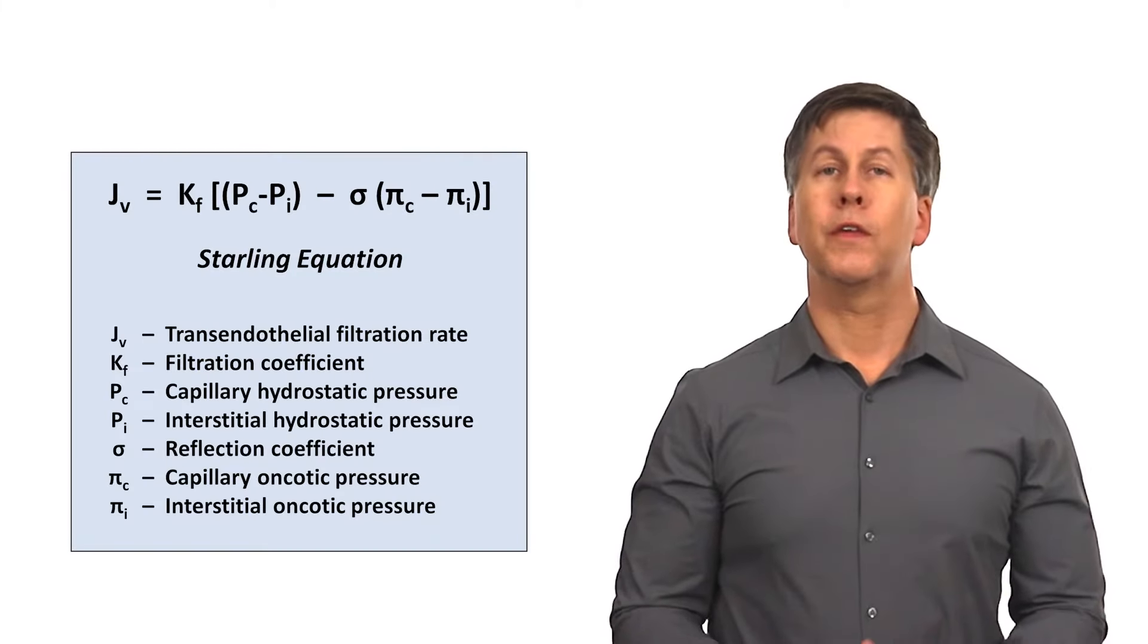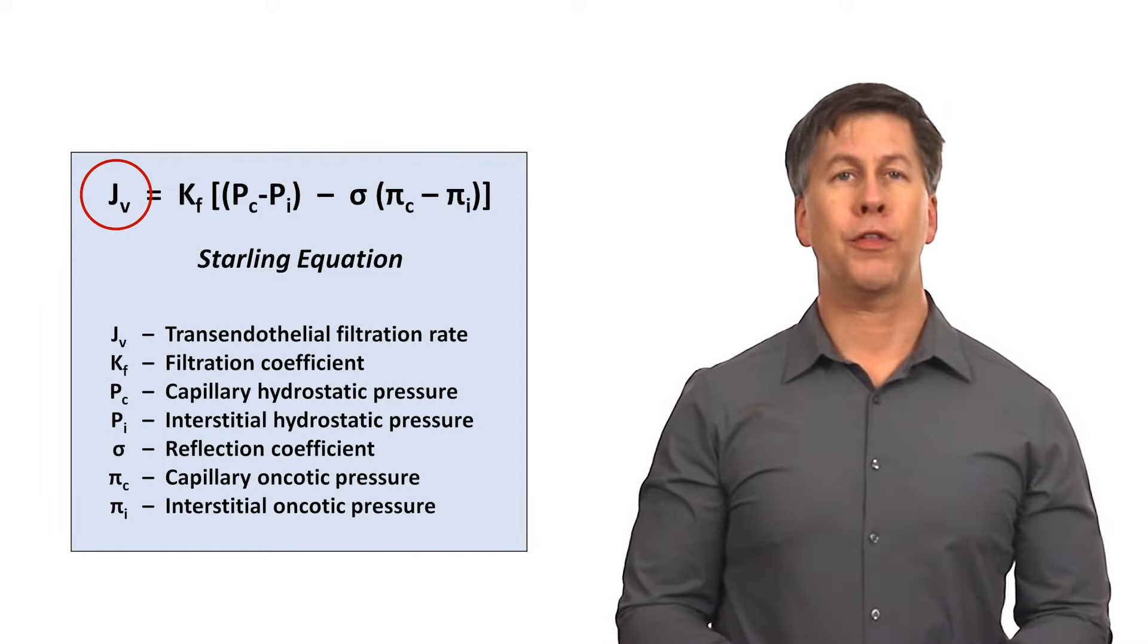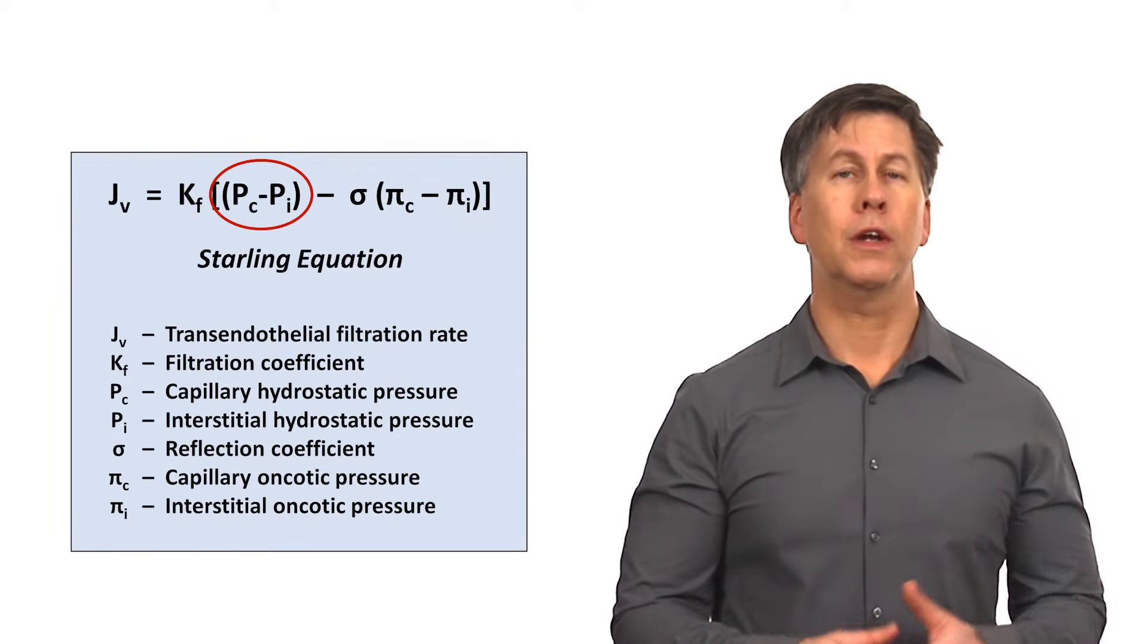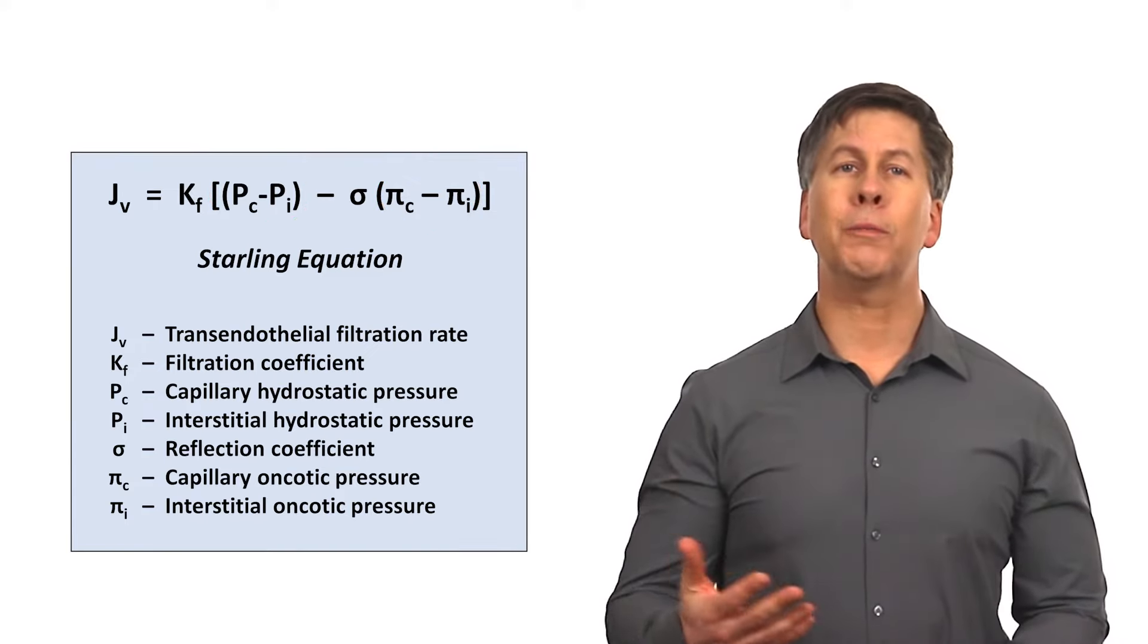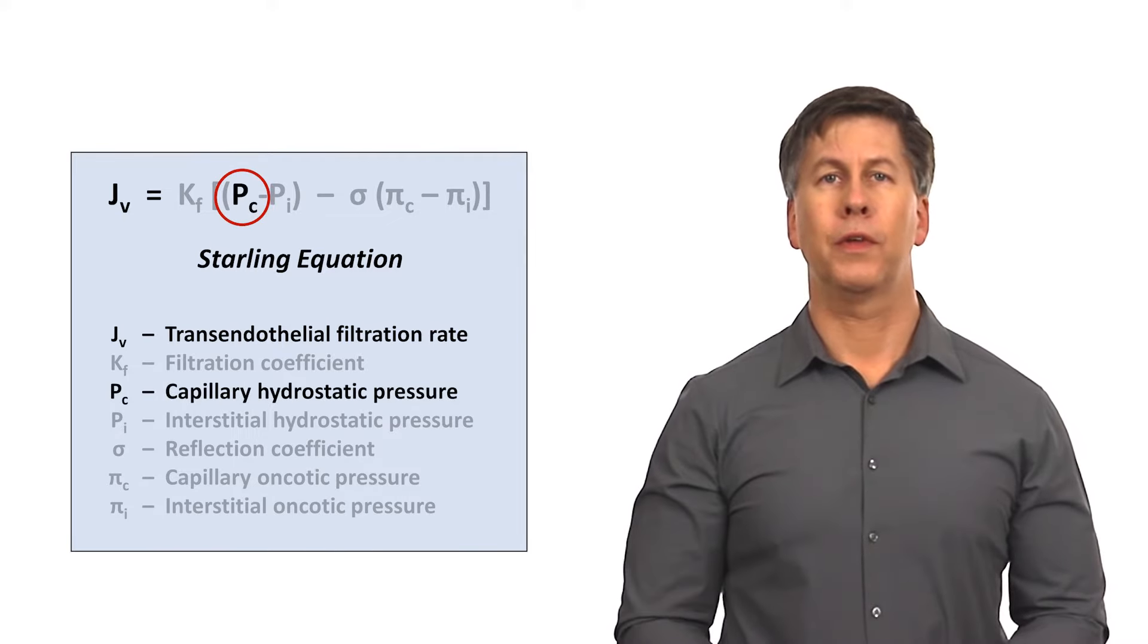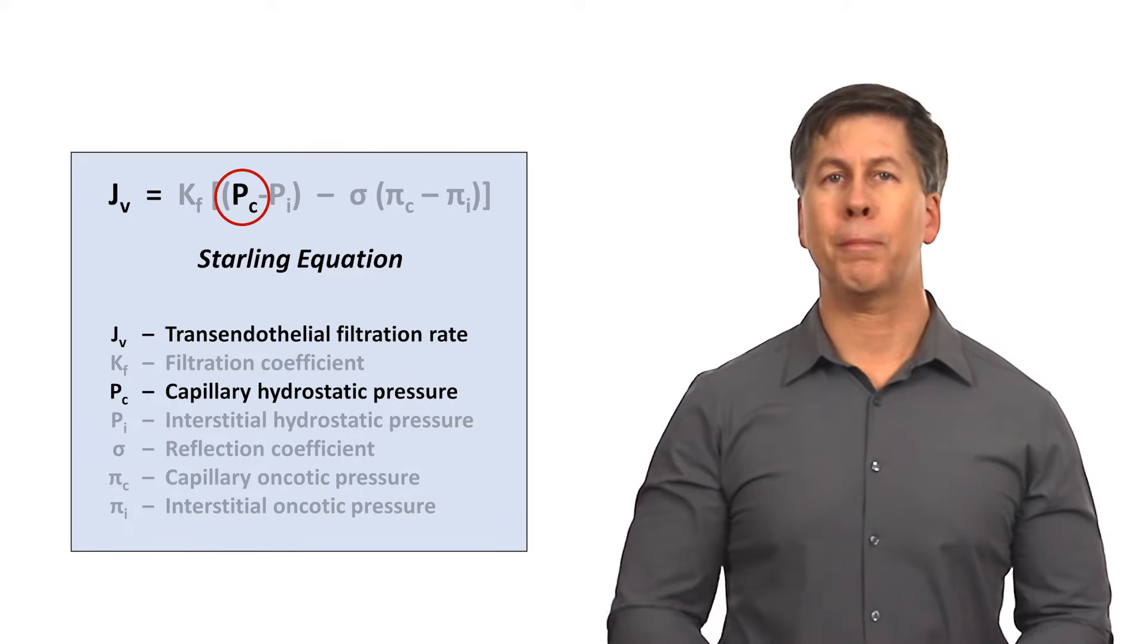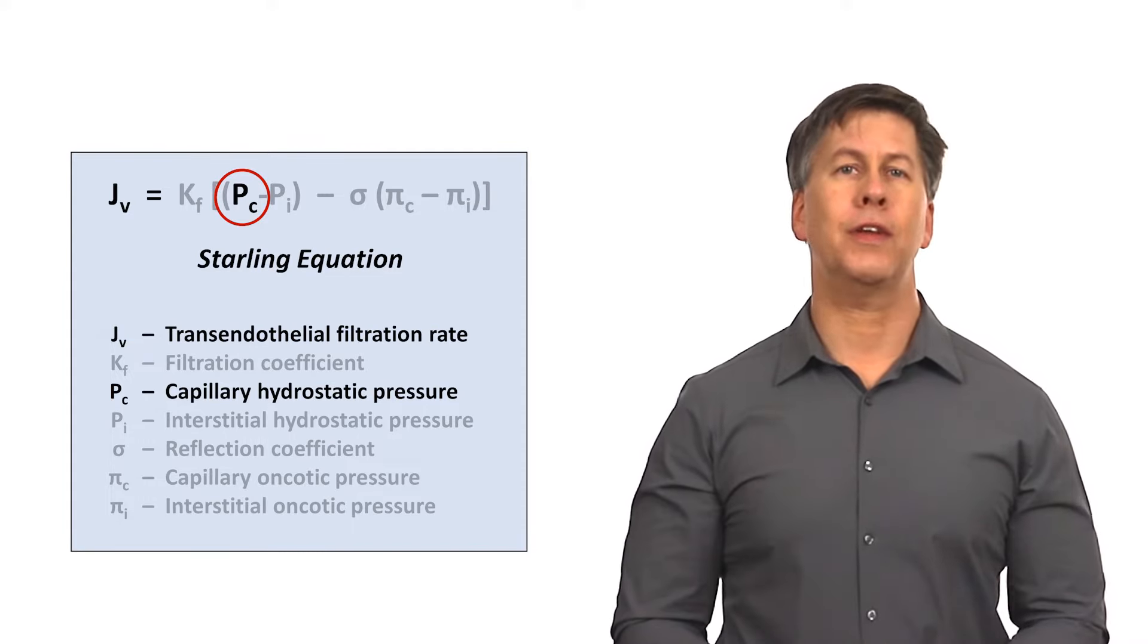The development of edema is primarily governed by the Starling equation. The Starling equation describes how the net filtration rate of fluid across the capillary endothelium is dependent upon the balance between the capillary and interstitial hydrostatic pressures and the capillary and interstitial oncotic pressures. Of the six variables on the right side of the equation, three vary in a clinically meaningful way. First is the capillary hydrostatic pressure, which is almost solely dependent upon venous pressure downstream from the capillary. The higher the hydrostatic pressure, the more fluid is squeezed out into the interstitial space.